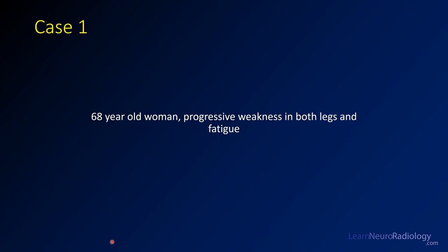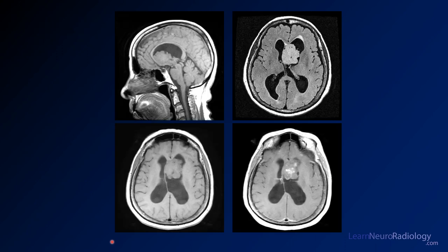For case one, this is a 68-year-old woman with increasing weakness in the legs and fatigue. Here are some images from an MRI of the brain. This is a sagittal T1 in the top left, FLAIR in the top right, and pre and post contrast at the bottom. You should try to get used to figuring out which ones you're looking at.